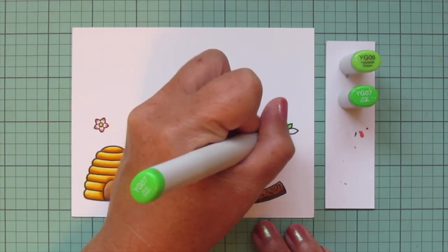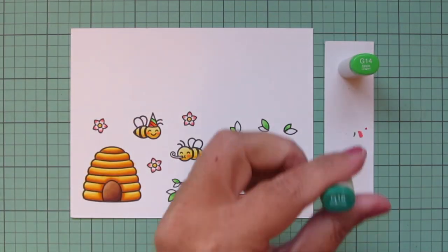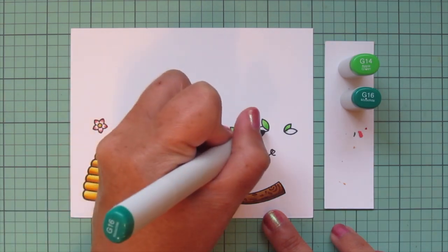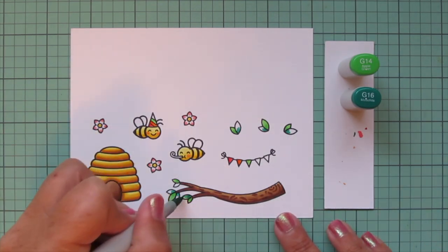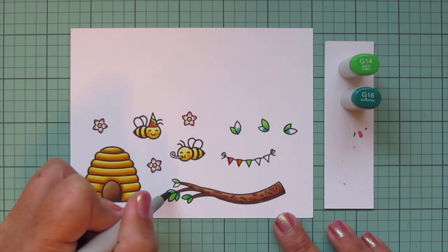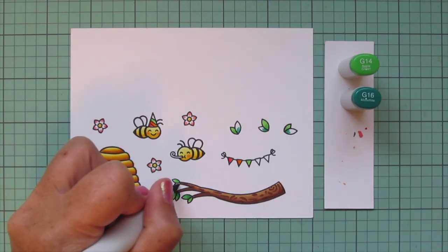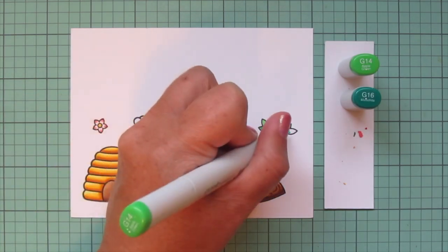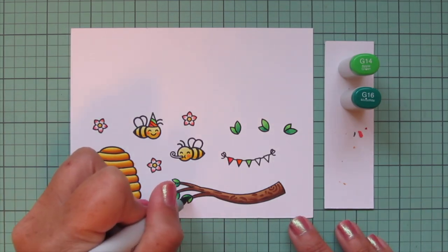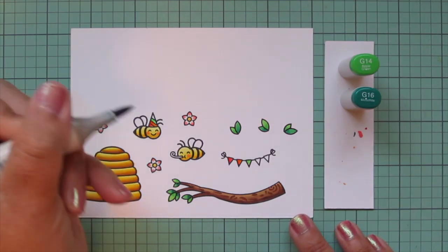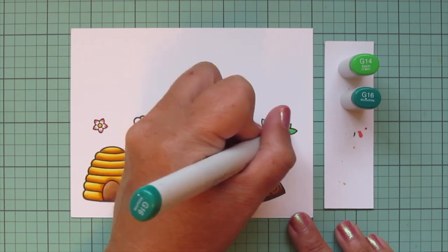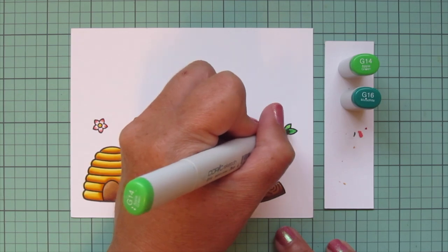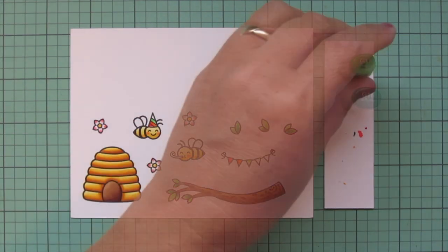For the other leaves, I wanted to go a bit more cool tone, so I went with G14 and G16. I'm just going to repeat that same process, adding in the G16 first and then blending out with the G14, and then I will go back in with a little bit of extra of the G16. Although in this case, the G16 is quite a bit darker than the G14, so I did need to blend that out just a little bit with a second layer of both shades.